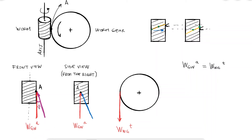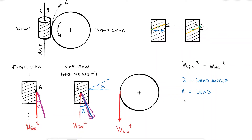The purple vector would be on top of the blue vector with its tail coming out of the screen and its head meeting the head of the blue vector. From the side view, the angle between W_GW axial and the blue vector on the same plane is the lead angle, which we were already familiar with from screws. This lead angle can be calculated if we know the lead and the pitch diameter, using the same relationship from the screws videos.